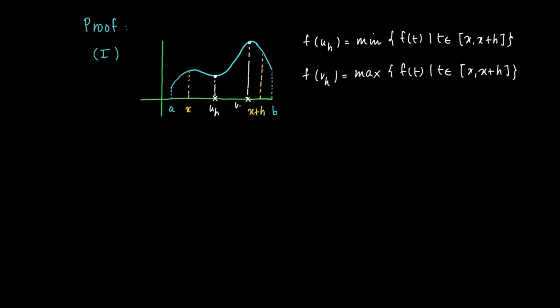So here we have v(h). What we know is that on the interval [x, x+h], f(u(h)) is less than or equal to f(t) for any t in this interval, and f(t) is less than or equal to f(v(h)) for any t in this interval.